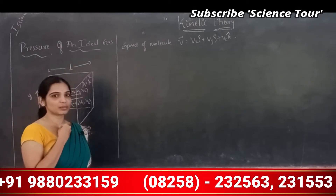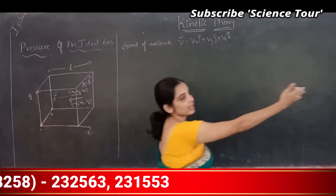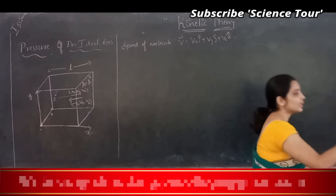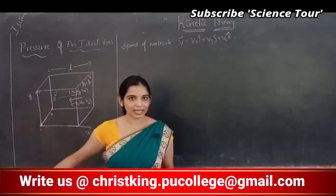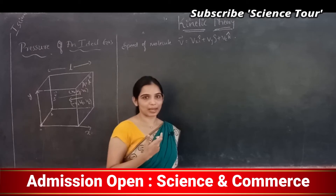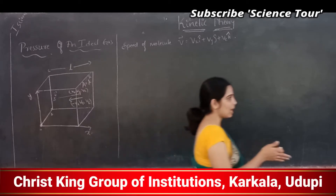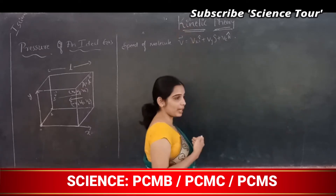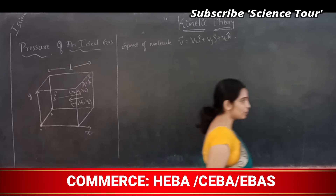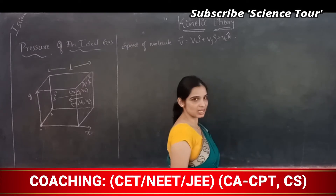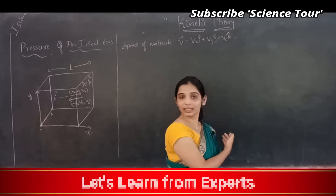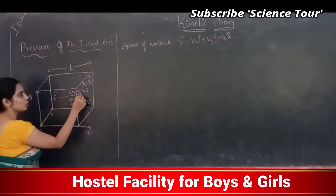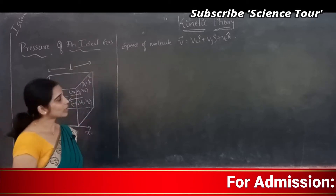This classroom is like a cube. Imagine myself as a molecule moving and hitting that wall. While moving my speed is Vx, Vy, Vz. After hitting I rebound back along the x-axis. The y and z components remain the same, but x is reversed. So after rebounding, this molecule will have −Vx, Vy, and Vz.